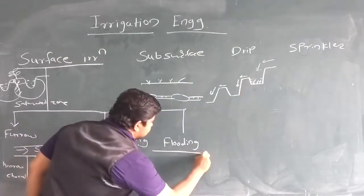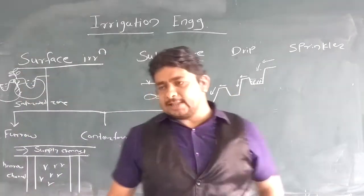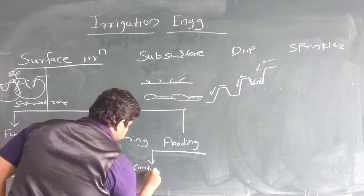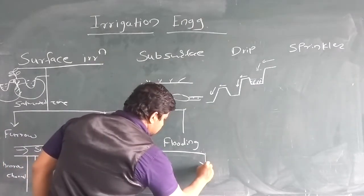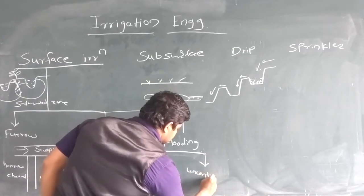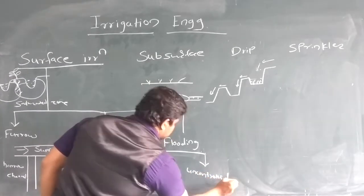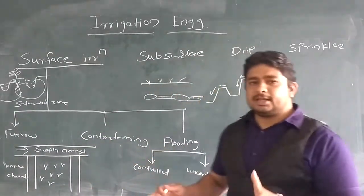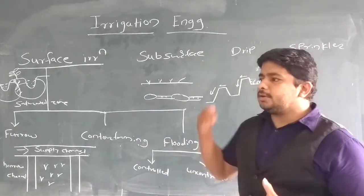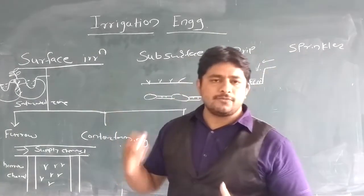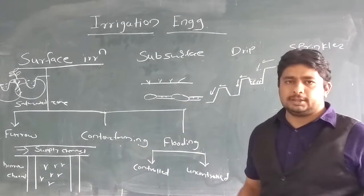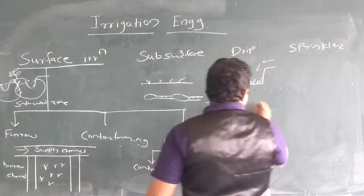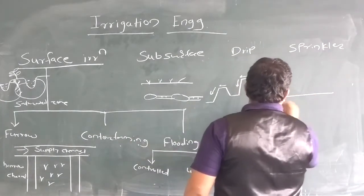Next is flooding. Flooding is classified into two subcategories: controlled and uncontrolled methods. When the quantity and direction of water is to be controlled, that method is known as the controlled method of flooding. Where the direction and quantity of water is not controlled, that is the uncontrolled method. The controlled method is further divided into a number of categories, the best example being the border strip method.